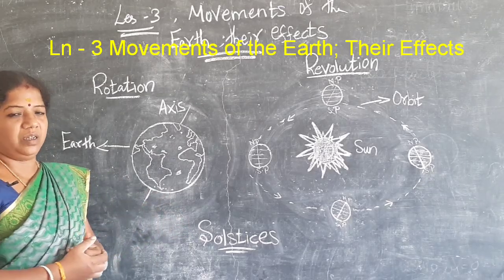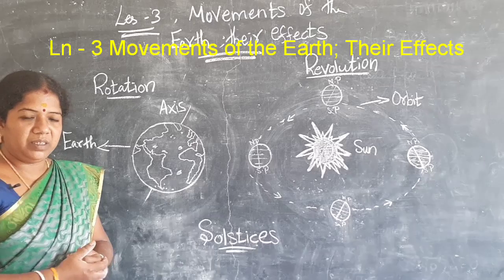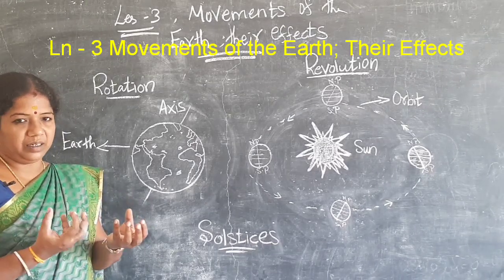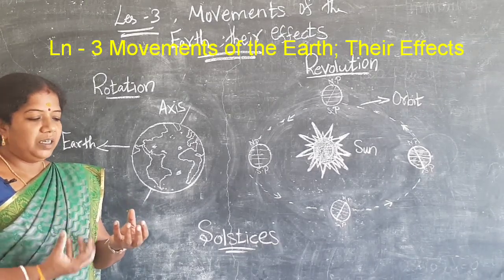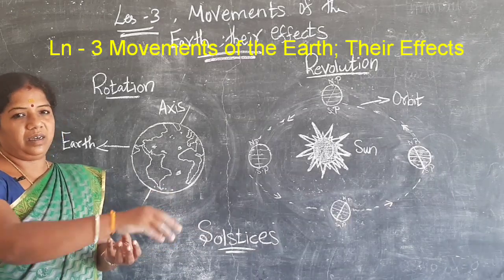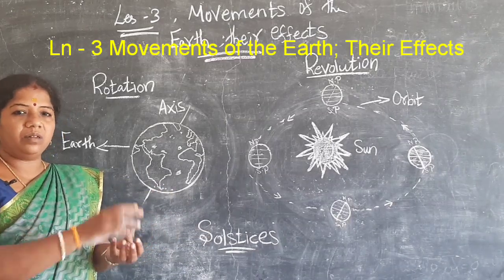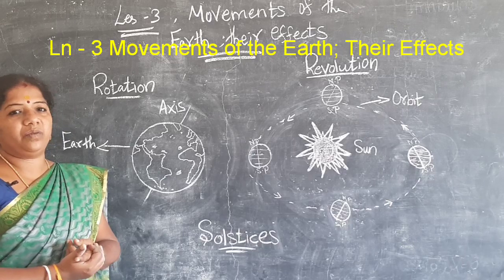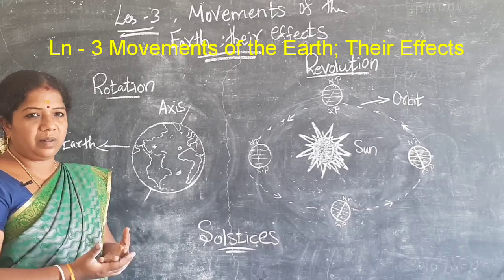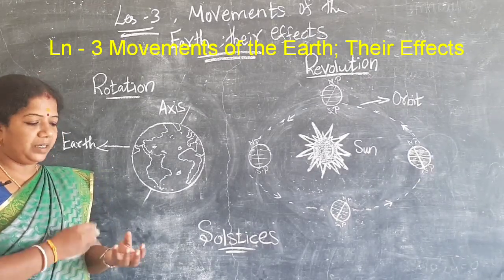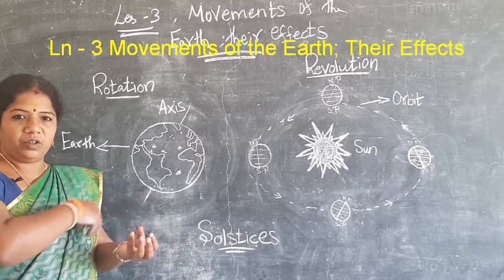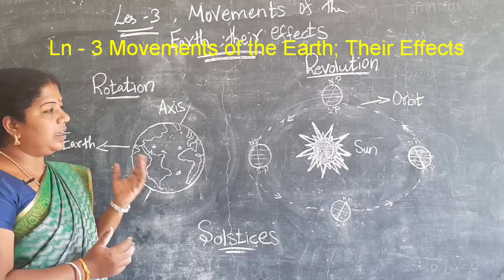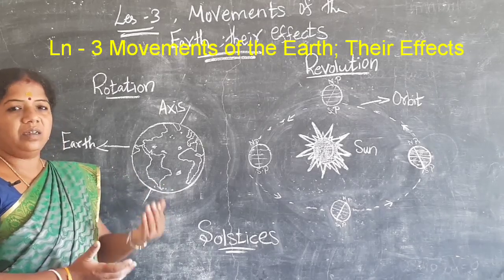Now let's come to revolution. Revolution means the earth revolves around the sun. This is the sun and this is the earth — the earth revolves around the sun. It takes 365 and a quarter days, or one year, to complete one revolution.